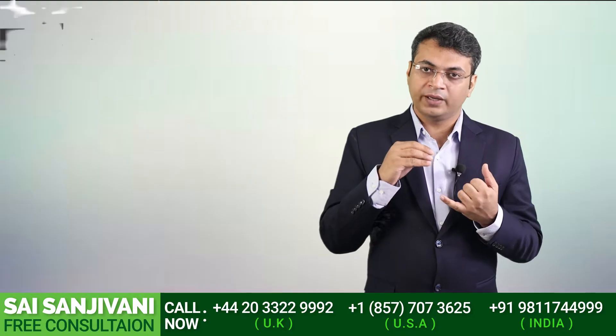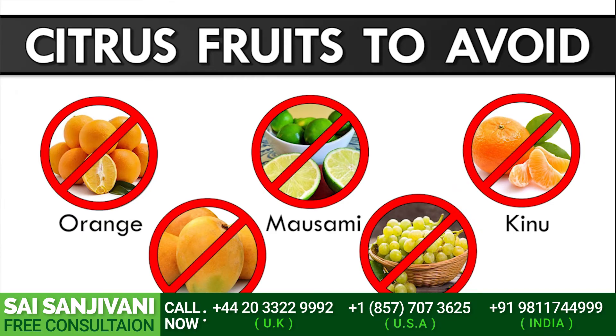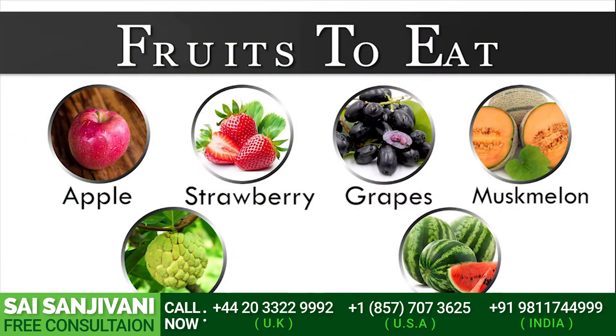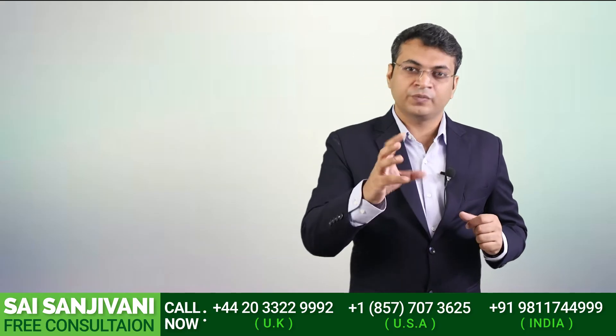In the fruit category, we have to avoid banana, kiwi, avocado, dry fruits, raisins, and all kinds of citrus fruits. Fruits that can be taken include apple, papaya, muskmelon, watermelon, and custard apple — but the quantity should be limited to one cup, because if we take more than one cup, potassium will start accumulating in our body.